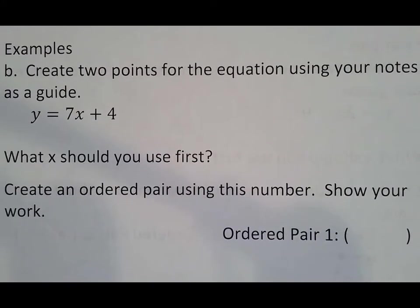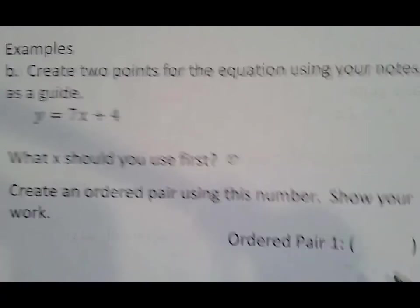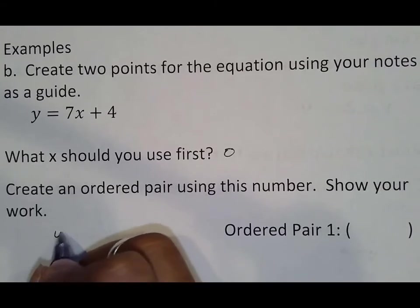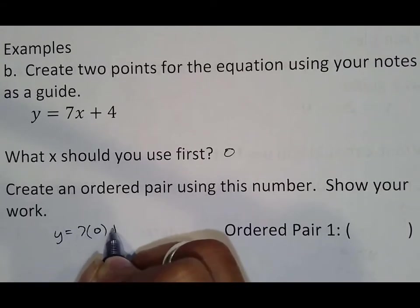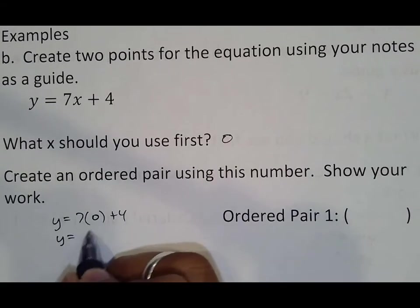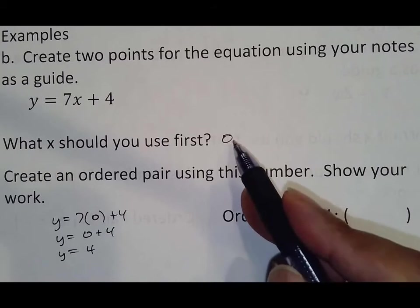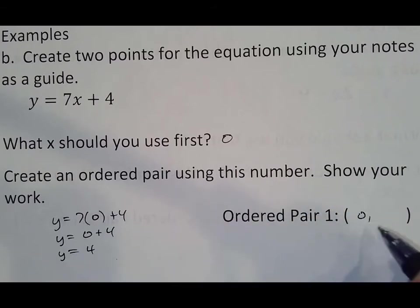Again, questions are very repetitive. Create two points for this. What x do you use first? Zero. Always use zero first. And so then we'll do y equals seven times zero plus four. Again, anytime you use a zero, it means it's going to turn into zero plus four. And anything, pretty much the zero again just goes away leaving us four. So our first ordered pair is x equals zero, y equals four.